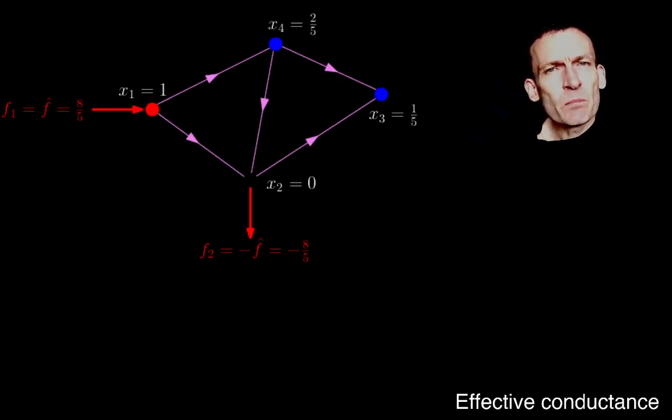So those are kind of like the input and output nodes, if you like. And then the blue nodes, Kirchhoff's current law holds there. What I did in the last lecture was I solved for the voltages x3, x4, the voltages there, and I also solved for what I called x hat, which is the divergence of the current at node 1, where I set the voltage to be 1. And it's the divergence of the currents there, which is basically the current into the circuit at node 1. And then notice that the divergence at node 2 is precisely the negative of that, and it's the current that leaves the circuit at node 2.